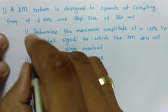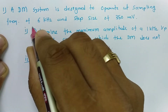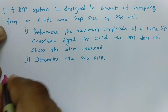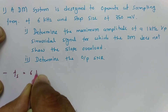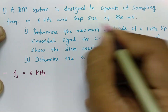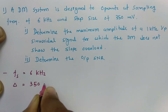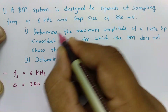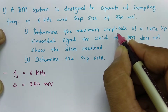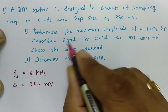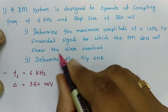In the first problem, a delta modulation system is designed to operate at a sampling frequency of 6 kilohertz. Let us note down all the given data: sampling frequency Fs is 6 kilohertz and step size delta is 350 millivolt. The problem asks us to find the maximum amplitude of a 1 kilohertz input sinusoidal signal for which delta modulation does not show slope overload.